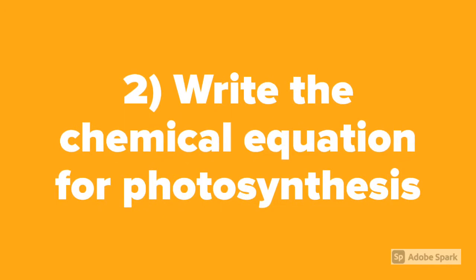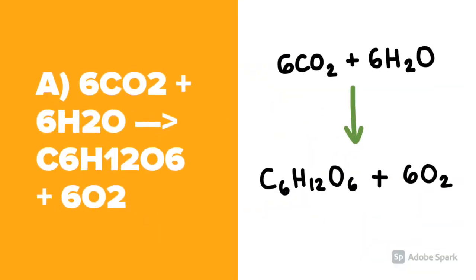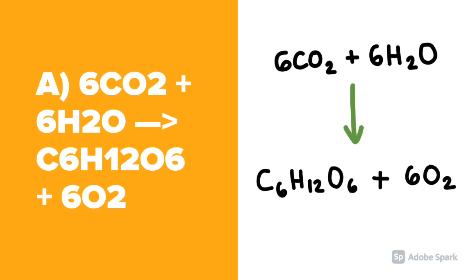Question number 2: Write the chemical equation for photosynthesis. The answer is 6 molecules of carbon dioxide plus 6 molecules of water gives 1 molecule of glucose and 6 molecules of oxygen.